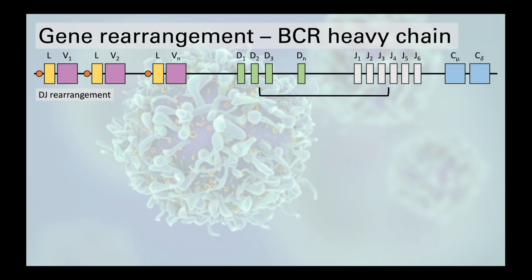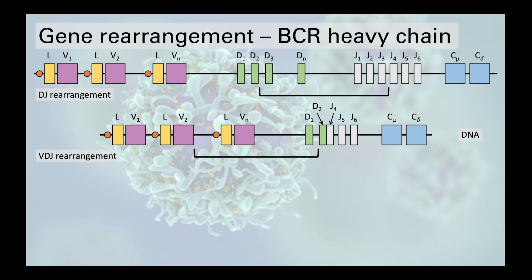The first step is a DJ rearrangement, which splices out an entire section of the DNA between a randomly selected D segment and a randomly selected J segment. In this case, the region between D2 and J4 is deleted and D2 and J4 align themselves together in the new sequence of DNA. In the next step, VDJ rearrangement occurs — a segment from the variable region is selected at random and the DNA between that segment and the newly combined DJ segment is spliced. In this example, V2 is aligned with the D2-J4 segment.